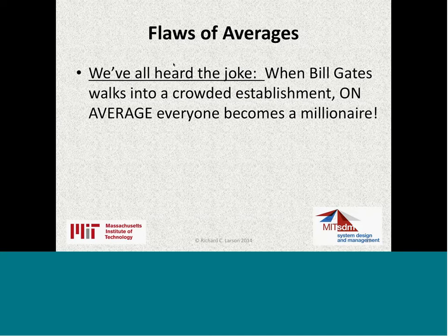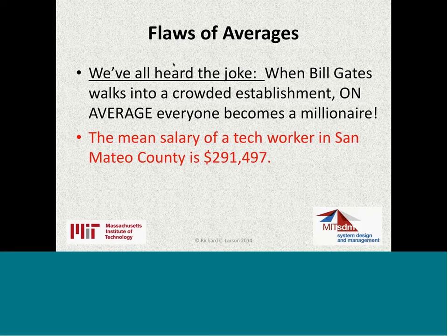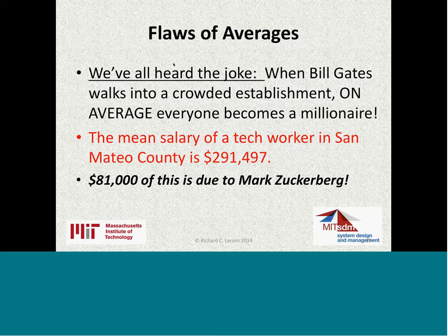When Bill Gates walks into a crowded establishment, on average, everyone becomes a millionaire. In San Mateo County in Northern California, the mean salary of a tech worker is $291,497 a year. However, $81,000 of this is due to Mark Zuckerberg — the equivalent of Bill Gates walking in. If you're a tech worker in Silicon Valley, you're probably not even close to $291,000 minus $81,000. So what you really want is medians and modes of distributions, not just the average. The median is the 50-50 point where 50 percent are above and 50 percent below.